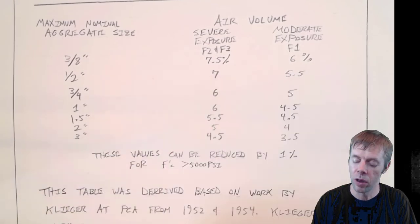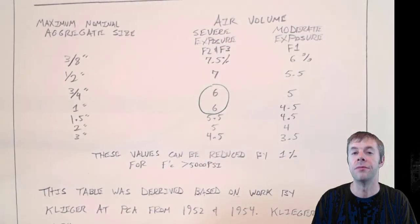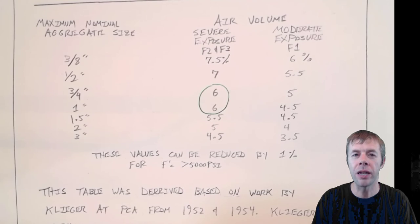A lot of people ignore this entire table. And they'll just use something like 6%. They'll have a plus or minus on it, but 6% is what they'll design for. That's what most people require.